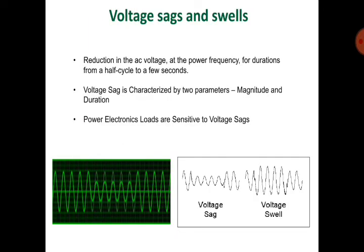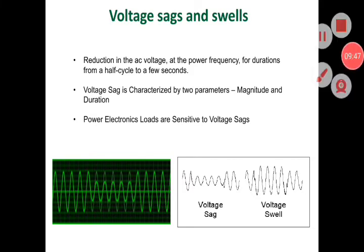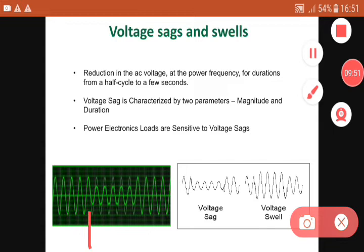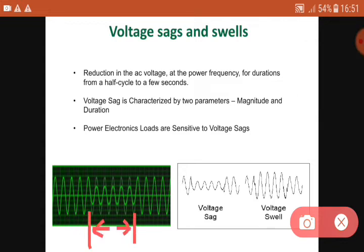Voltage sags and swells: a reduction in the AC voltage at power frequency for durations from half a cycle to a few seconds is considered a voltage sag. Voltage sag is characterized by two parameters: magnitude and duration. In the waveform, the amplitude in a certain portion is lower than the normal value — that portion is a voltage sag. A voltage swell is where the amplitude of the voltage increases for some cycles.